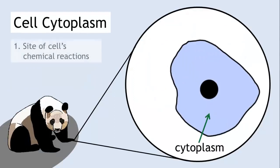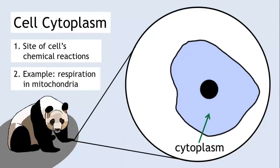The cell cytoplasm is the site of the cell's chemical reactions. Lots of chemical reactions occur here, such as respiration. Respiration takes place in specialised structures called mitochondria.